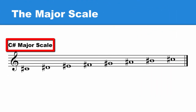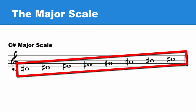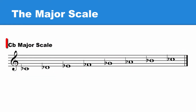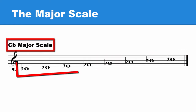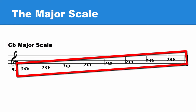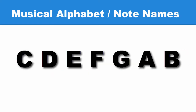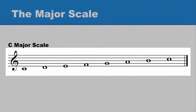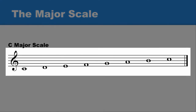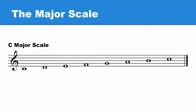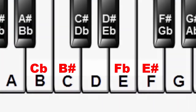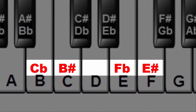In the C sharp major scale, every note has a sharp. In the C flat major scale, every note has a flat. Both of these scales will use the same musical alphabet starting on C. Both will have their notes placed on the staff in the same location as the C major scale, and both use enharmonic note names found on the white keys.